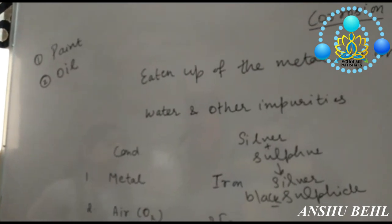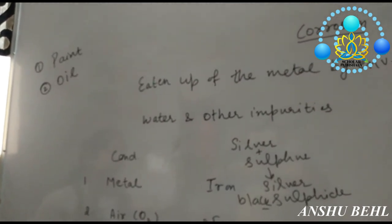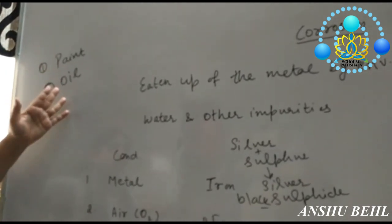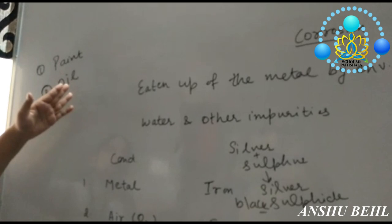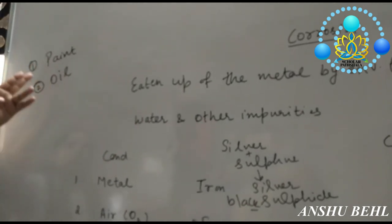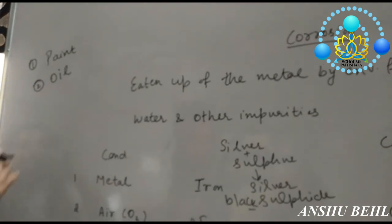So, what can be the methods in which corrosion can be prevented? First method can be making a layer or coating over the surface of metal so that it can't react with air. That is, it can be painted or it can be oil or galvanized.